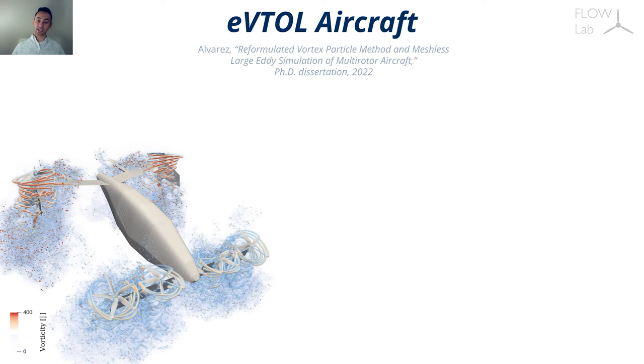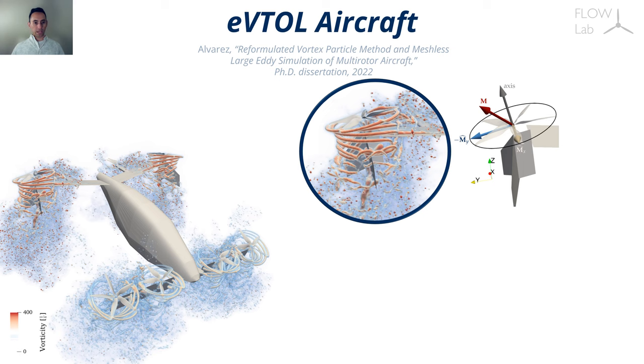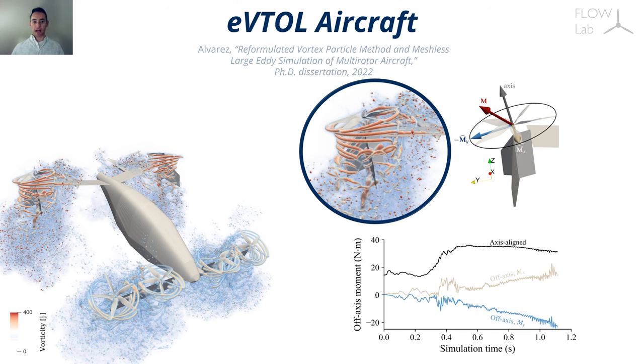In hover, we realized that the wing obstructs the wake of the rotor, creating an asymmetric loading on the rotor. We integrated the loading of the blades to calculate the moment of the rotor, and noticed that the blockage leads to the moment to be misaligned from the axis of rotation of the rotor. These off-axis components generate a pitching moment that fluctuates, which could cause vibrations or potentially destabilize the aircraft in hover. This is an example of the interactions that we can predict with this high-fidelity CFD.